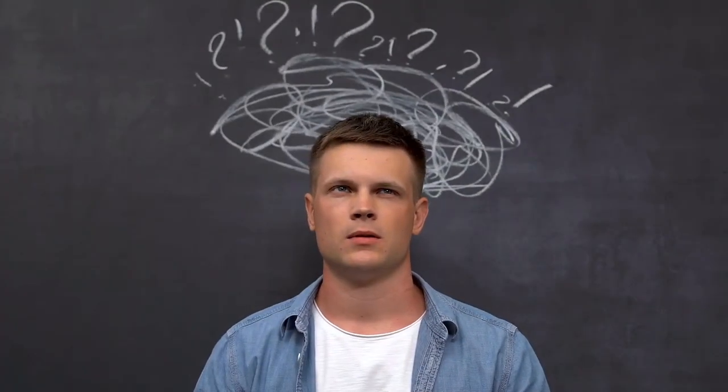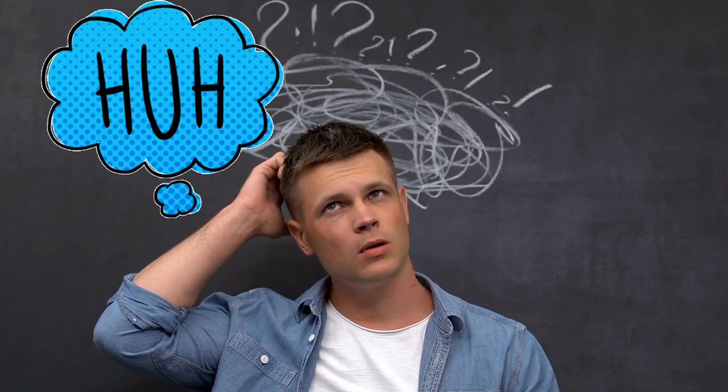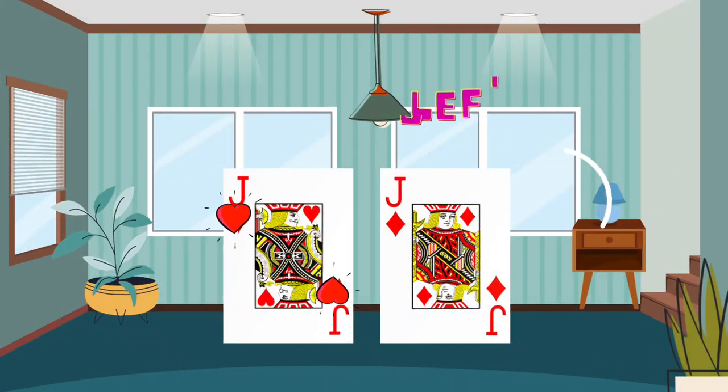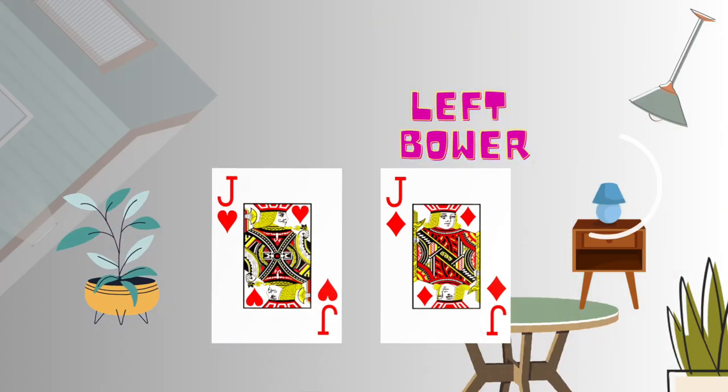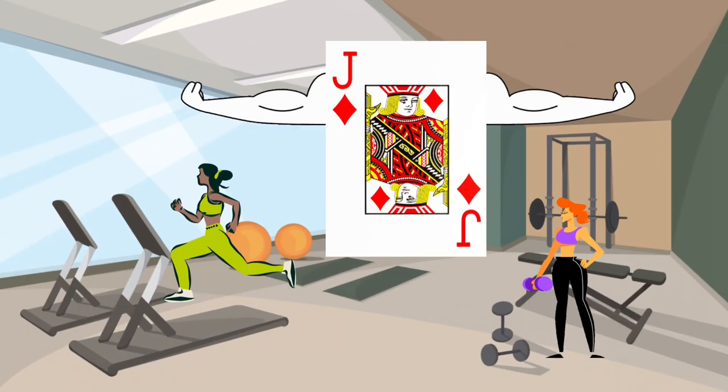In Euchre, the Left Bower is the jack from the suit that's the same color as the Trump suit, but not the Trump suit itself. So, if hearts are Trump, the Left Bower would be the jack of diamonds. It's a powerful card, second only to the Right Bower.